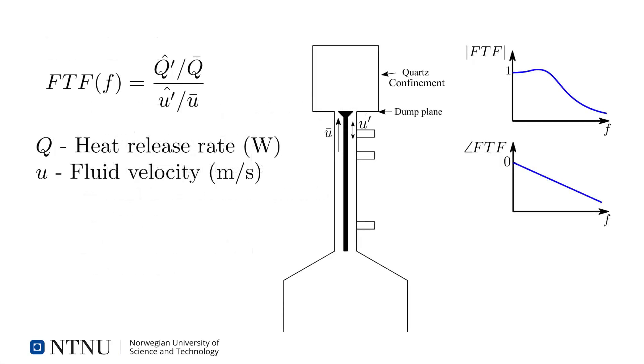An FTF describes the response of a flame to acoustic oscillations in a combustor, and it's a critical input to acoustic models that are used to predict the stability of a combustor. A thermoacoustically unstable combustor can experience strong acoustic oscillations that can disturb the flame stabilization, triggering a shutdown, and the vibrations can even cause direct mechanical damage. The acoustic oscillations are driven by oscillations in the heat release rate from the flame, which is responding to the acoustic oscillations, so a feedback loop is established.